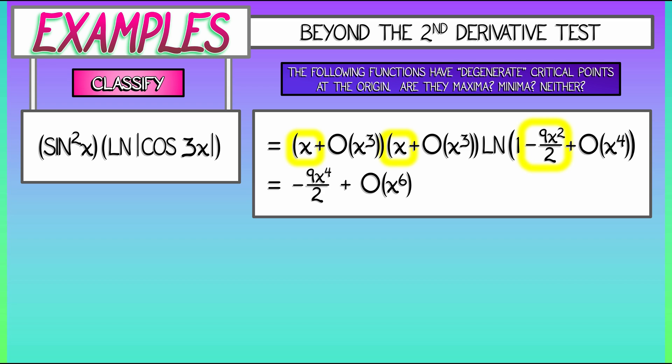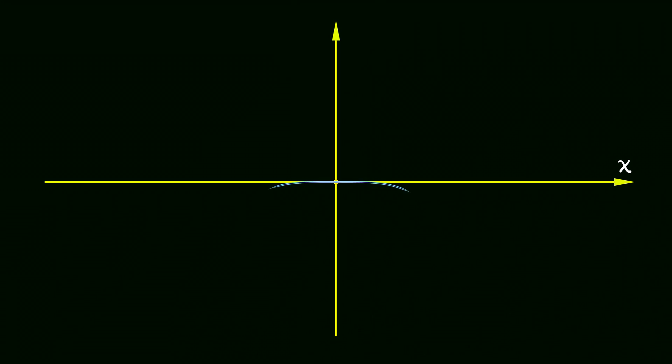So, knowing that this function near the origin locally looks like minus 9 halves x to the fourth plus higher order terms, we can say that critical point at the origin is a critical point. First derivative is zero. It's a degenerate critical point. The second derivative is zero. In fact, the third derivative is zero. It's the fourth derivative where this function turns on. And that fourth derivative, it's negative. That means that we have a local maximum, as one can verify by graphing the function and examining what is happening near zero.